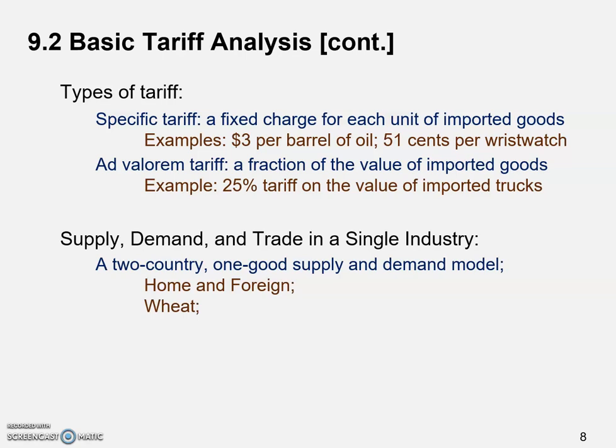We discuss a two-country model for simplicity, but once you understand two countries, you can easily extend it to three countries or an n-country model. Another way to interpret this is as a model of the trading relationship between the U.S. and the rest of the world — taking the U.S. as Home and the rest of the world as Foreign. Another assumption we're going to make is that there's no effect of the exchange rate between the two currencies.